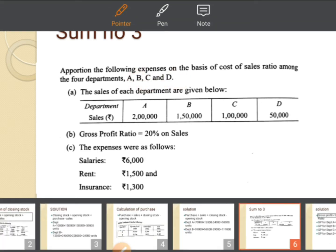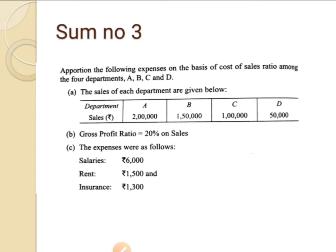Departments A, B, C, D are given. The sales of each department are given — for A it is 2 lakh, for B it is 1,50,000. The gross profit ratio is 20% on sales. The expenses are as follows: salary 6,000, rent 1,500, insurance 1,300.